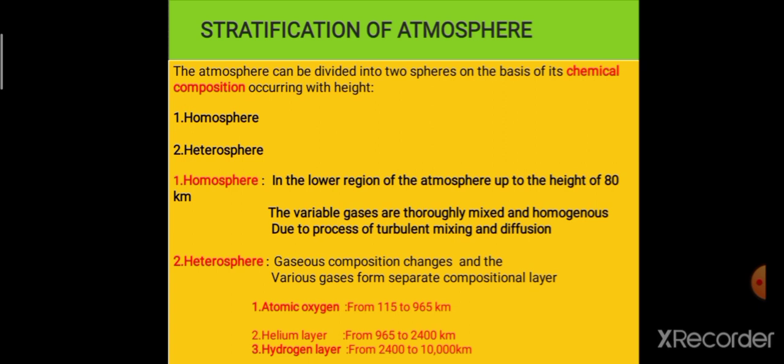The first basis of stratification is chemical composition. On the basis of chemical composition, the atmosphere has been divided into two layers: the homosphere and the heterosphere. 'Homo' means homogeneous or similar. The homosphere is up to the height of 80 kilometers, meaning it is in the lower layer of the atmosphere.